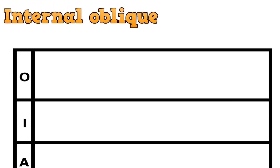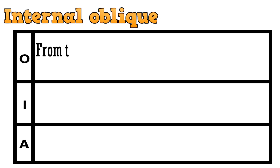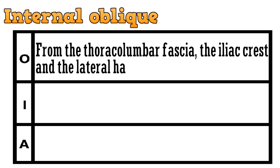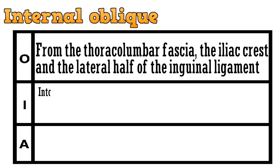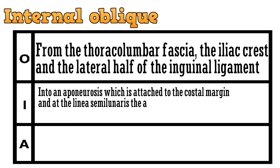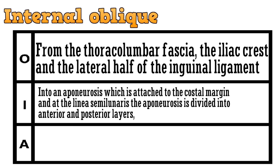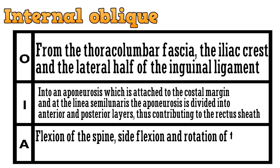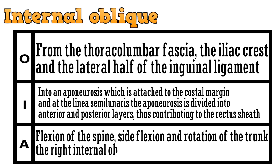The next abdominal muscle is the internal oblique. The muscle originates from the thoracolumbar fascia, the iliac crest, and the lateral half of the inguinal ligament. It gets inserted into an aponeurosis attached to the costal margin, and at the linea semilunaris the aponeurosis is divided into anterior and posterior layers, contributing to the rectus sheath. The action is flexion of the spine, side flexion, and rotation of the trunk. The right internal oblique produces rotation to the right.